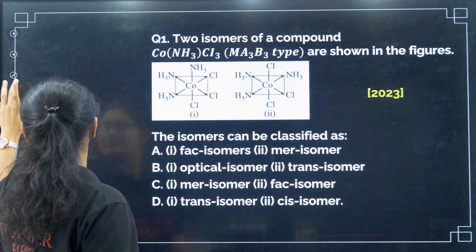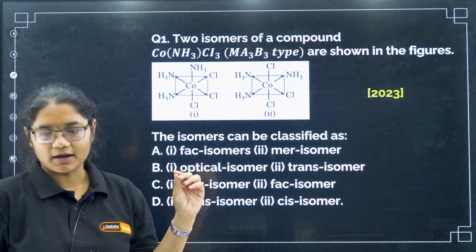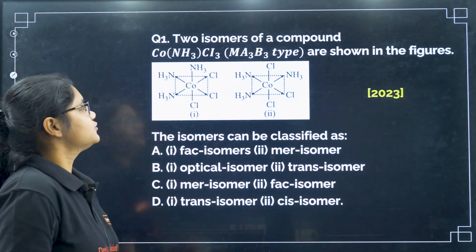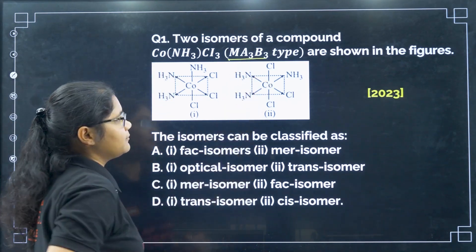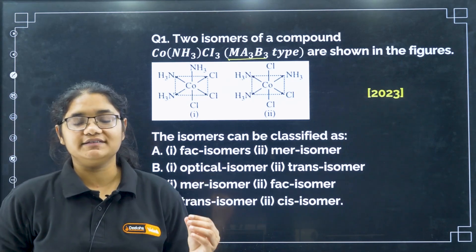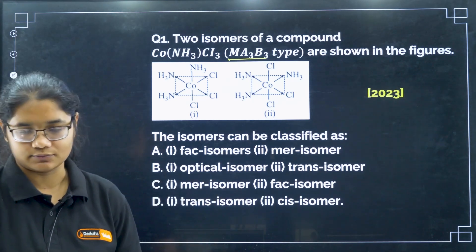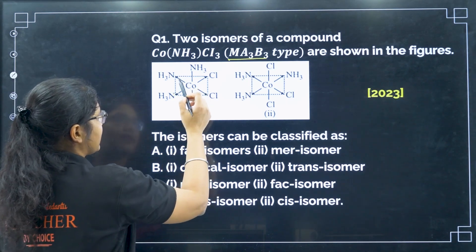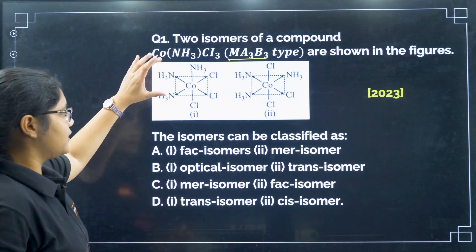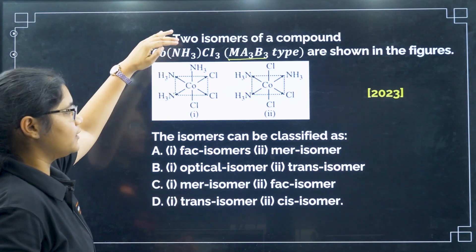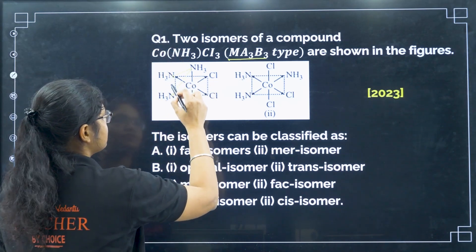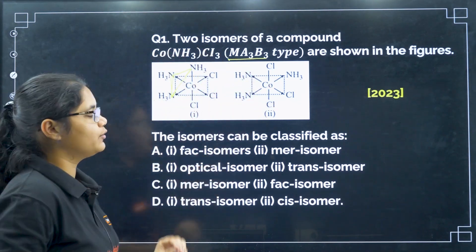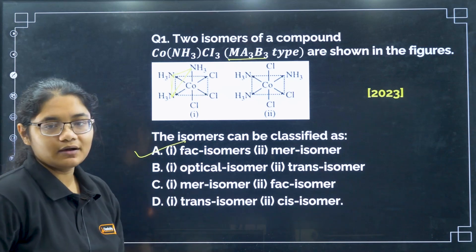Starting with the first question: here are two isomers of a compound shown in the figures. The isomers can be classified as what? Whenever you see an MA3B3 type compound, it will always give you facial and meridional geometrical isomers. If two ligands are on the plane and one ligand is on the top or axis, that makes one face of an octahedron — that is facial. So the first one is facial and the second is meridional. That is why option A.